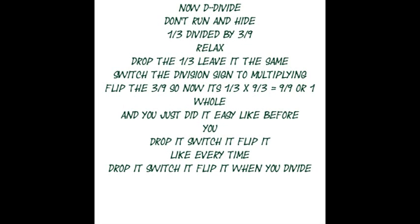1 over 3 divided by 3 over 9. Look here, relax — drop the 1 over 3, leave it the same, switch the division sign to multiply. Now flip the 3 over 9. So now it's 1 over 3 times 9 over 3. That's 9 over 9.